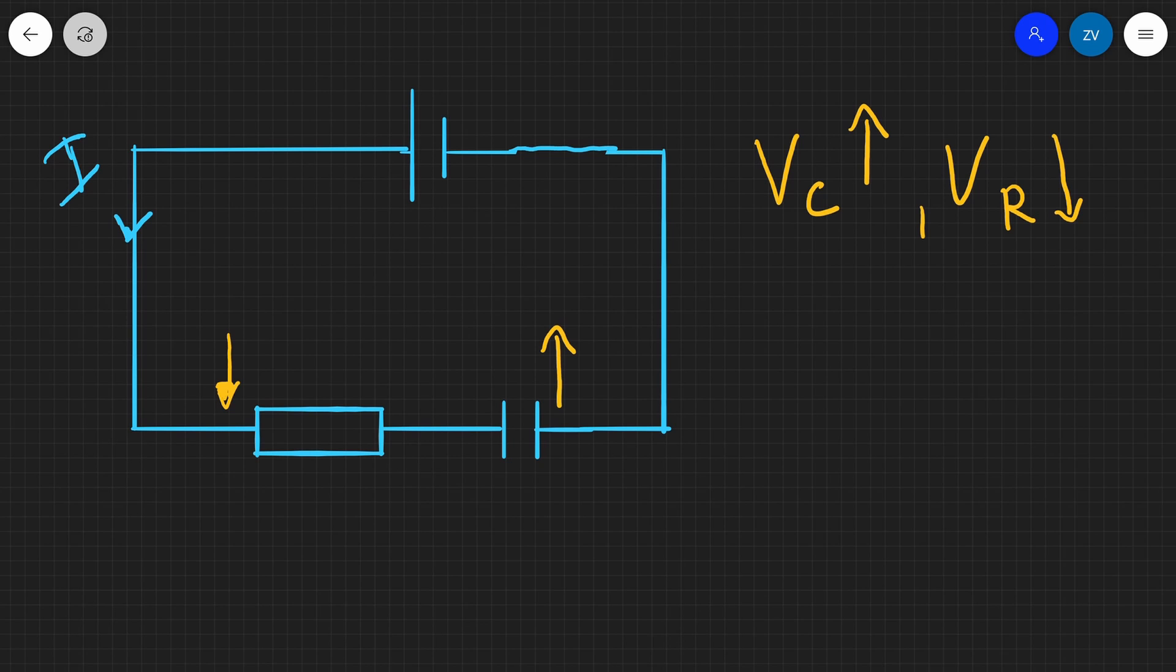How does the potential difference across the resistor vary with time? Well, initially, the potential difference across the resistor is just V0 as soon as we've closed that switch. And then it will be decreasing exponentially via our familiar formula, which is V0 e to the minus T over CR.